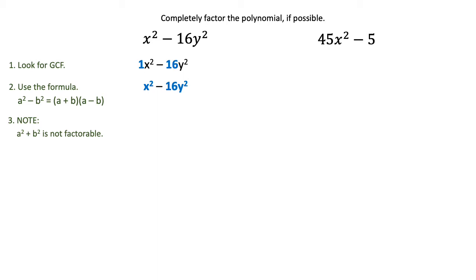Well the square root of x squared is x, the square root of 16 is 4, and the square root of y squared is y. So our two terms, our two roots, are x and 4y, and you're going to write that in the form x plus 4y, x minus 4y.